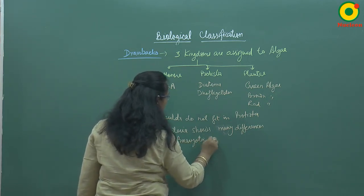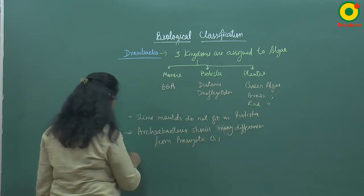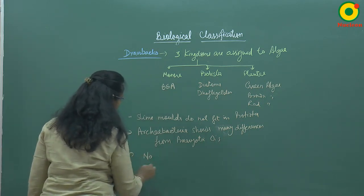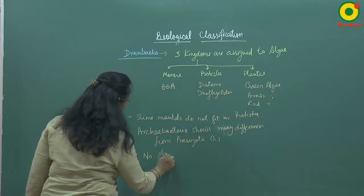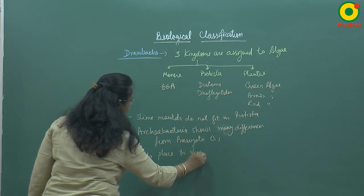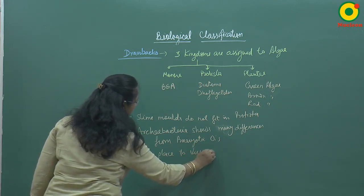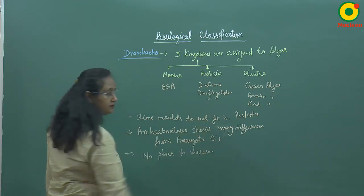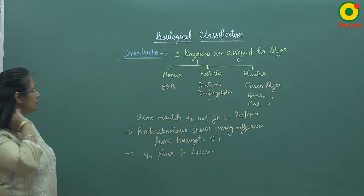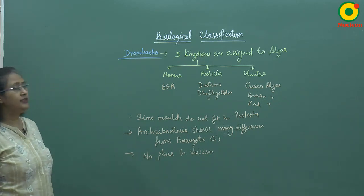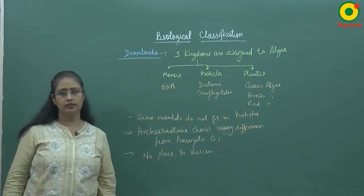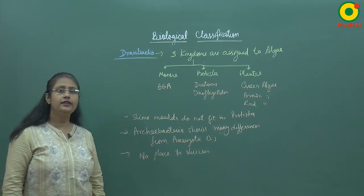One very important drawback is that he did not give any place to viruses in his classification system. So these are the drawbacks of the Whittaker kingdom system.